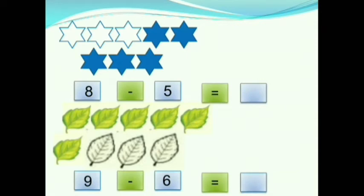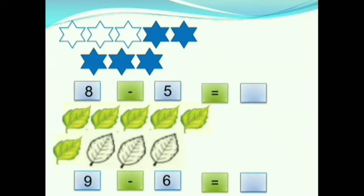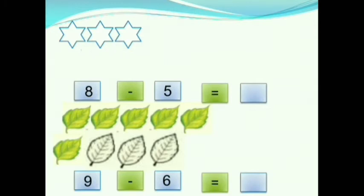Children, here we have stars. How many stars are there? Let us count it. 1, 2, 3, 4, 5, 6, 7, 8. There are 8 stars. 5 stars are colored and 3 stars are not colored. Now we will take away the colored stars. After taking away the colored stars, how many stars are remaining? 1, 2, 3. 3 stars are remaining. So, 8 minus 5 is equals to 3.